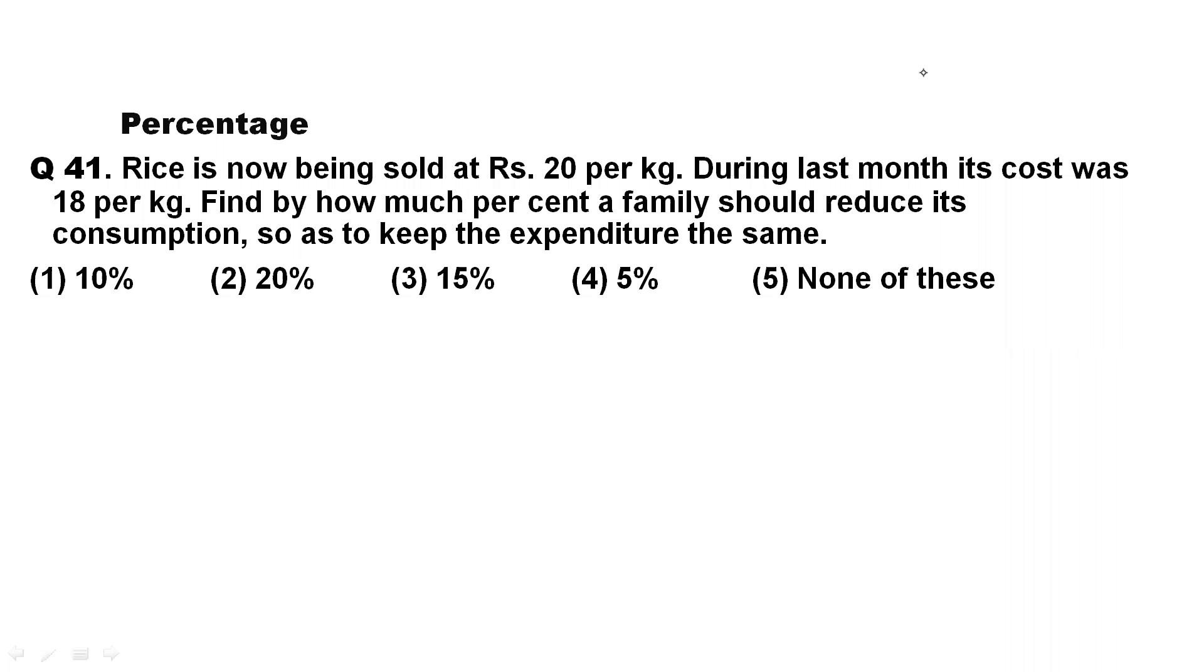I am using a shortcut here. Now see, rice is sold now at 20 rupees per kg, but last month it was 18 rupees per kg. Let's see what is the increment in the price. The increment is 2 rupees on 18. That means what is the fractional value? It will be 2 out of 18.